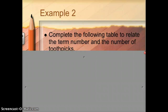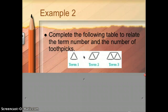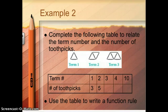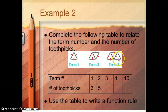We're going to look at a more complicated table. First we look at a drawing of toothpick patterns that make different triangles. I want you to compare the term number to the number of toothpicks. Term one has three toothpicks. Term two has five toothpicks. Term three has seven toothpicks. If I go to term four, it's going to have another little upside-down triangle, adding two more toothpicks, so that's nine.